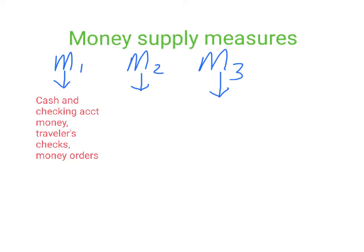M1 is also the most liquid one. It really means that these are forms of money that can be very readily used to buy goods and services in grocery stores or department stores, or any of this money can be very readily turned into cash. So if you have money in a checking account, you can just go to your bank and write a check or withdraw money from your checking account and turn it into cash. So M1 is the most liquid of the three money supply measures.